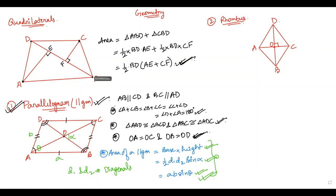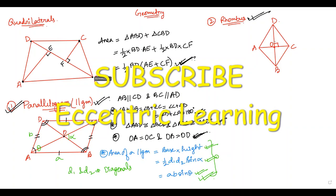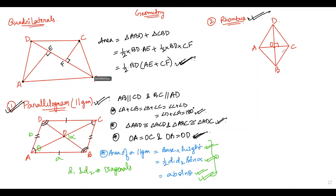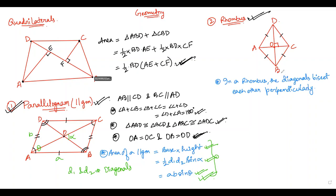If any two adjacent sides of a parallelogram are equal, then all four sides are equal and we get a rhombus. So a rhombus is a parallelogram in which all four sides are equal. Since a rhombus is a parallelogram, all properties of a parallelogram apply. Further, in a rhombus the diagonals bisect each other perpendicularly — diagonals AC and BD bisect each other and are perpendicular, so all four angles at the intersection are 90 degrees. Conversely, any quadrilateral where the two diagonals bisect each other at right angles is a rhombus.